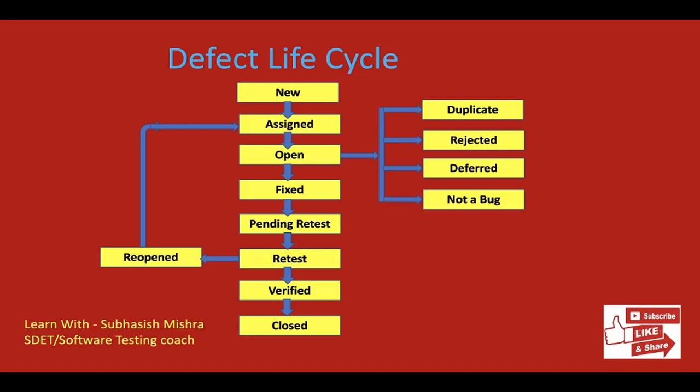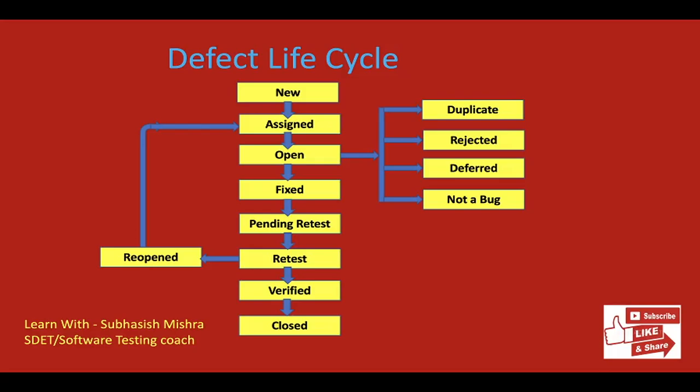Then the status is Not a Bug. If the QA misunderstood the functionality and wrongly raised the issue, the developer can mark it as Not a Bug — meaning they are not accepting it as a valid bug and will not fix it. That's all about the defect life cycle. Hope you understand all the statuses. If you have any questions, please let me know in the comment section. Please like, share, and subscribe to my channel.